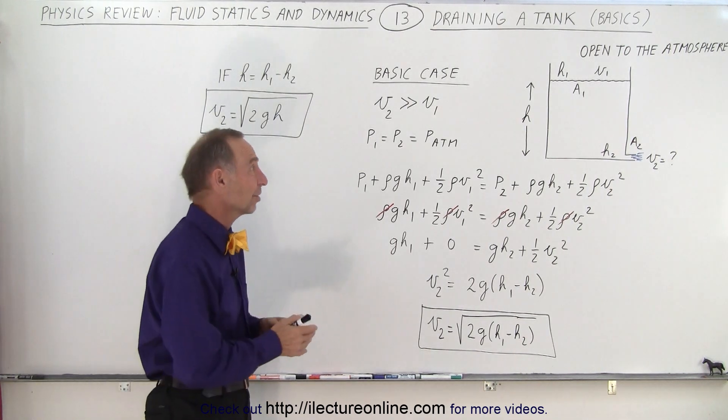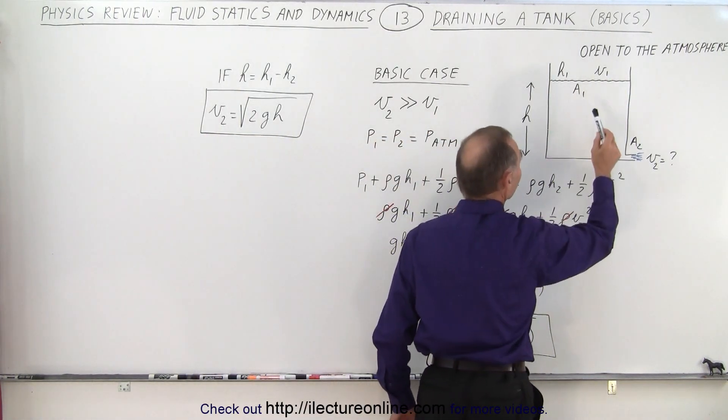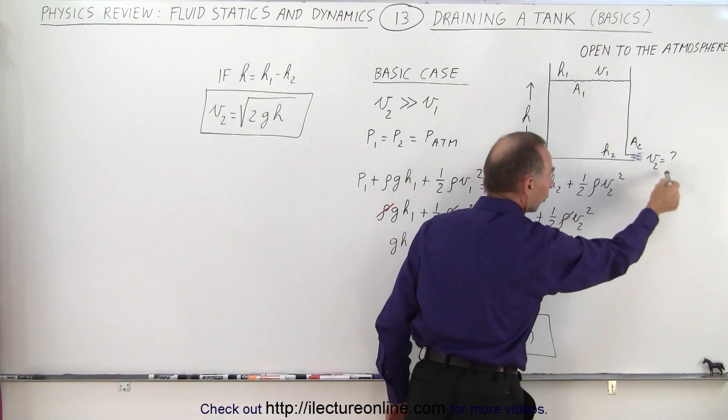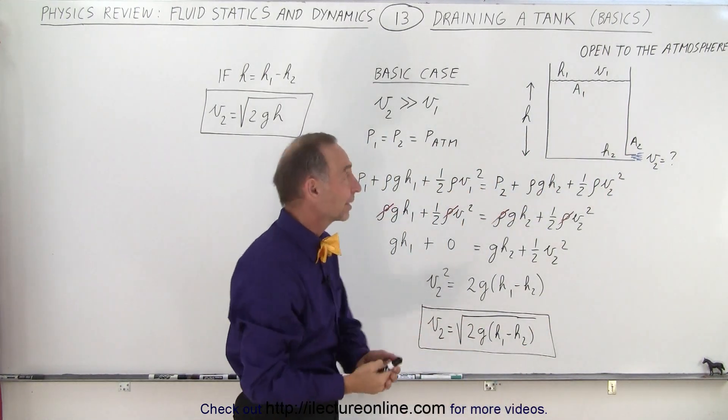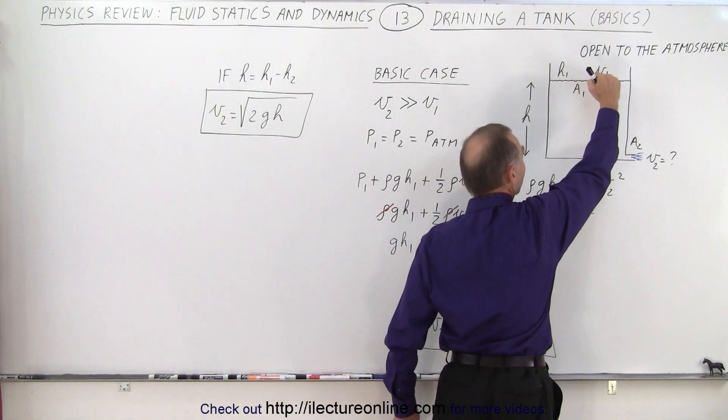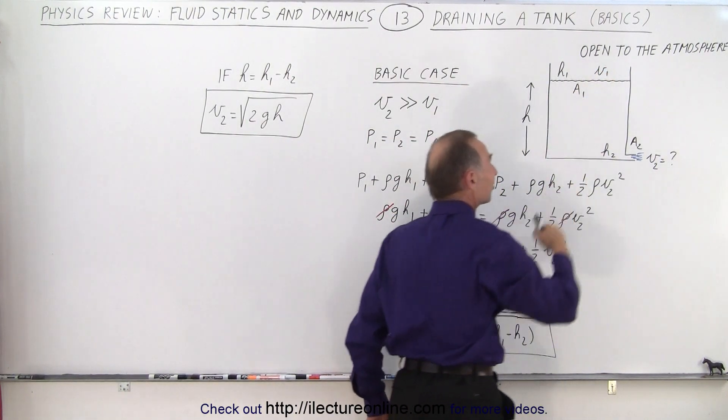But the basic case is such that you have a tank, the top is open to the atmosphere, and the tank is so big relative to the hole from which the water comes at the bottom of the tank that essentially the drainage of the water is so slow that the velocity at the top is essentially zero.